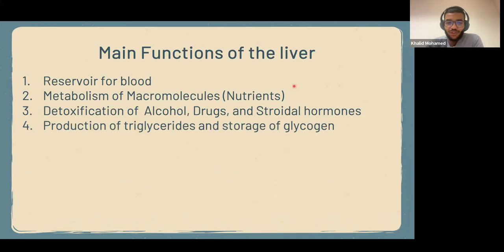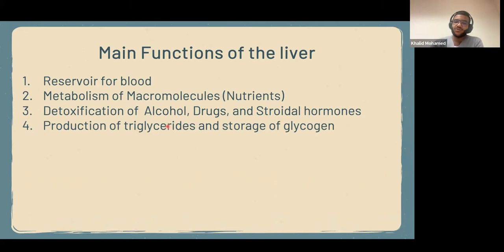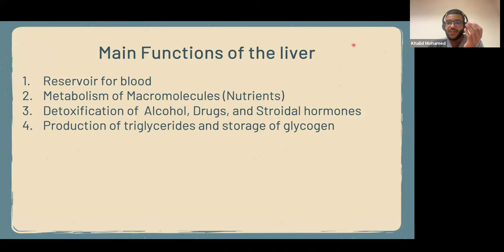Another function is the production of triglycerides and storage of glycogen. In the liver, glucose is absorbed and stored as glycogen, and then glycogen is converted into glucose whenever needed. The same is true for triglycerides or fats — they're stored in the liver and then broken down into fatty acids and glycerol whenever needed.